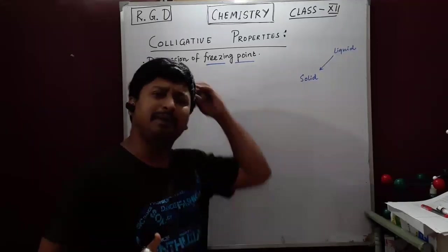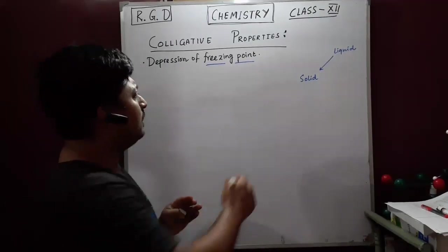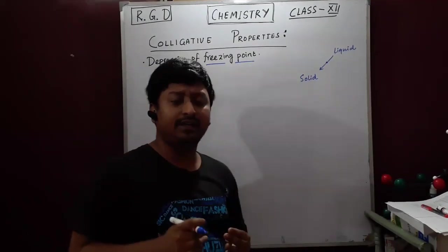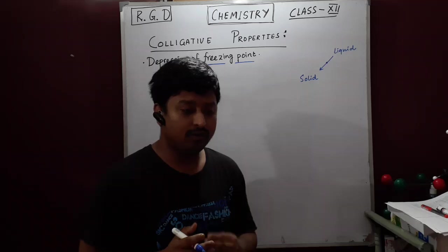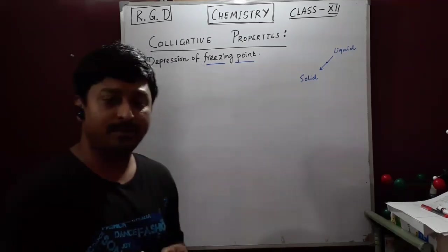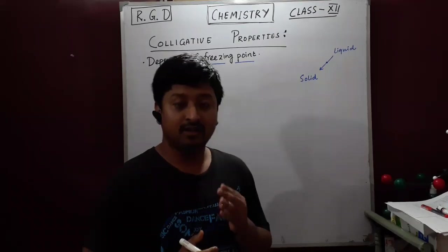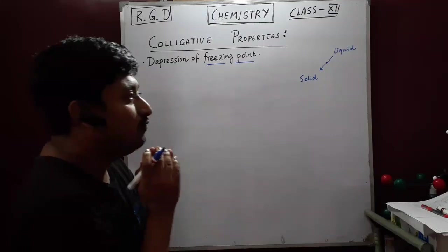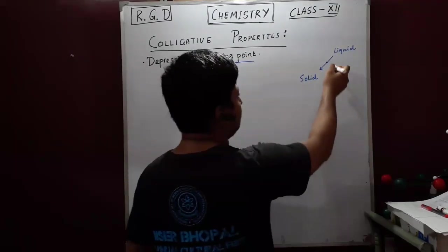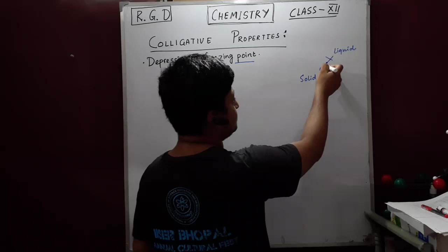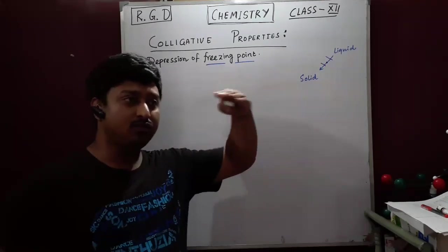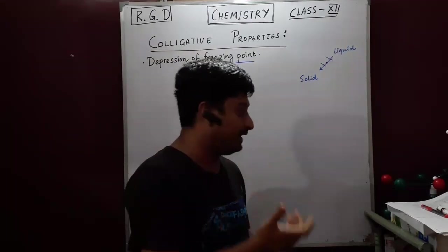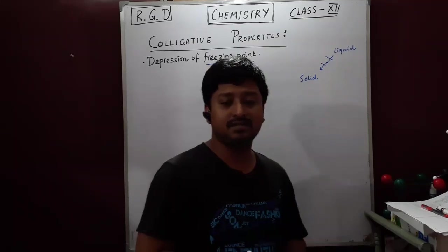When we are converting liquid to solid, the first colligative property — relative lowering of vapour pressure — is applicable for all colligative properties. That means at a particular temperature range, the vapour pressure between the two states will decrease. Although here there is no point in taking the vapour pressure because it is a solid substance or liquid substance.